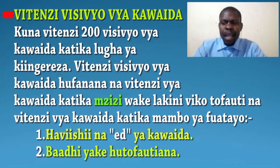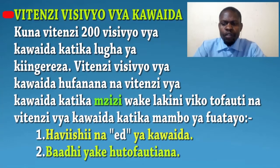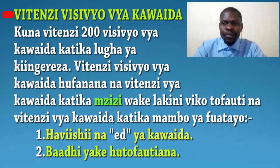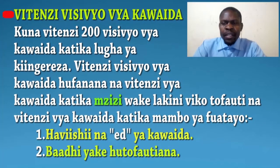Kuna vitenzi mia mbili visivyo vya kawaida katika lugha ya Kiingereza. Vitenzi vya kawaida katika mambo ya yafuatayo: Number 1: Havina ishii na ED ya kawaida. Number 2: Baadhi yake hutofautiana. (There are 200 irregular verbs in English. Regular verbs in the following ways: Number 1: They do not have the normal ED ending. Number 2: Some of them vary.)